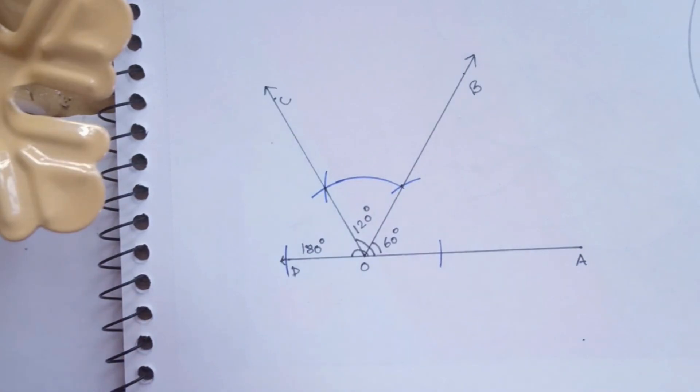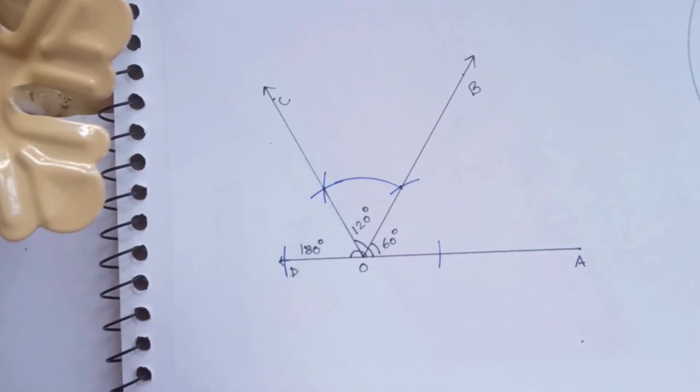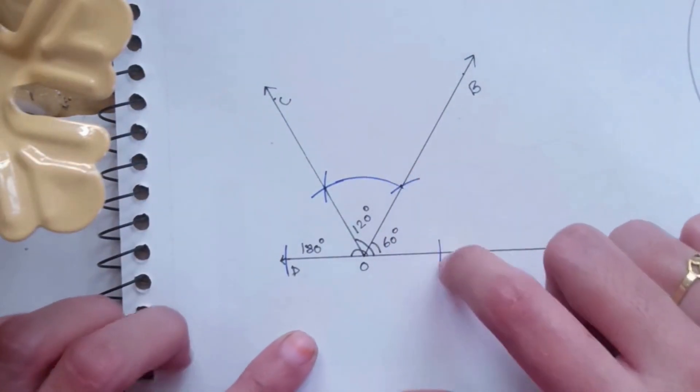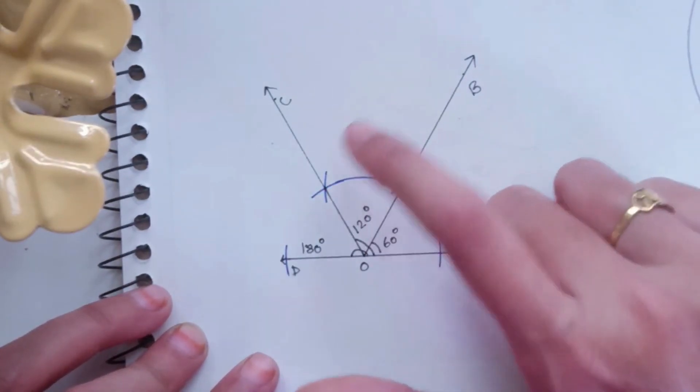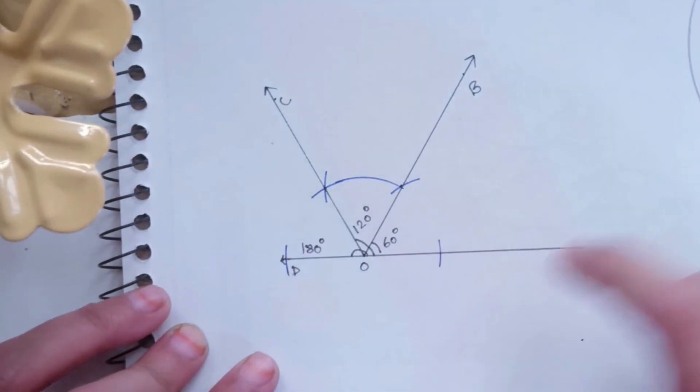Now that we have got 60, 120, and 180 degree angles, we will draw a 30 degree angle in between 0 and 60, a 90 degree angle in between 60 and 120, and a 150 degree angle between 120 and 180.